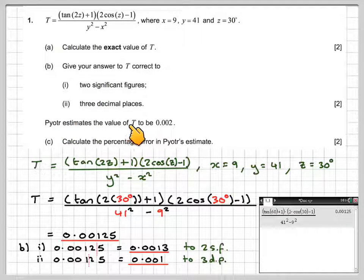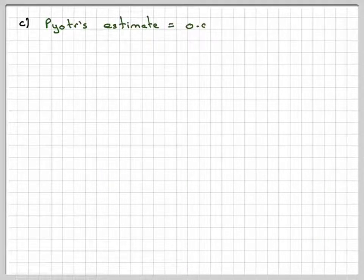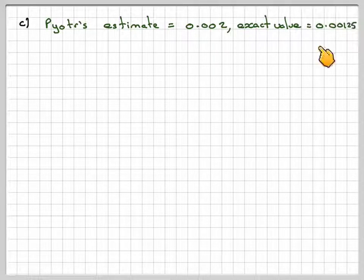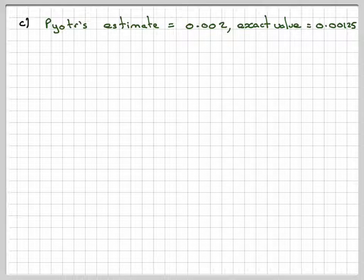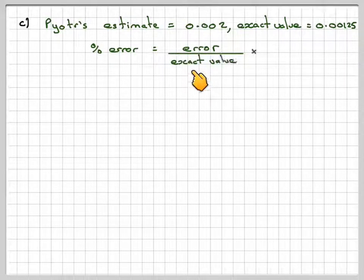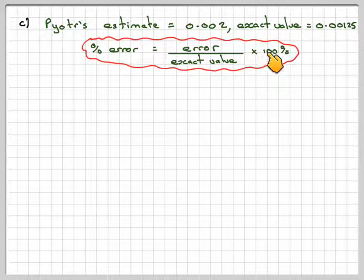Pyotr estimates the value of T to be 0.002. Calculate the percentage error in Pyotr's estimate. So, Pyotr's estimate is 0.002. The actual value was 0.00125. So percentage error is the error divided by the exact value, or the actual value, times 100%.